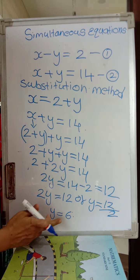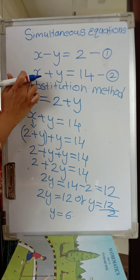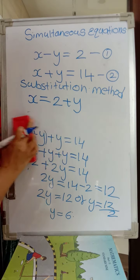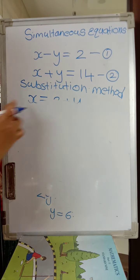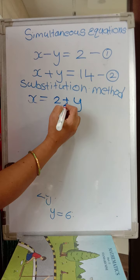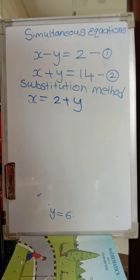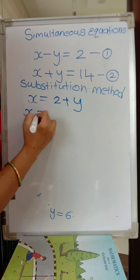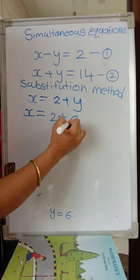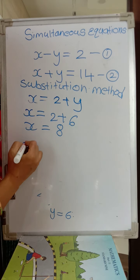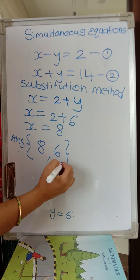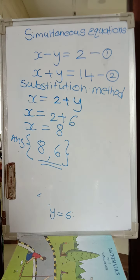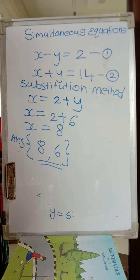We got y equals 6. Now substitute this back: we already found x equals 2 plus y. So x equals 2 plus 6, which gives x equals 8. Again we have the same solution: 8 comma 6. Write first the x coordinate, then the y coordinate — so the solution is 8 comma 6.